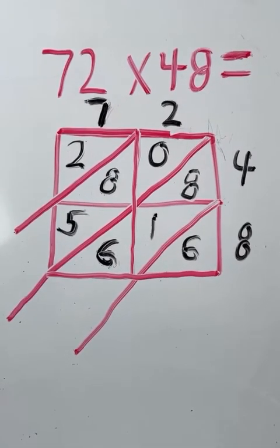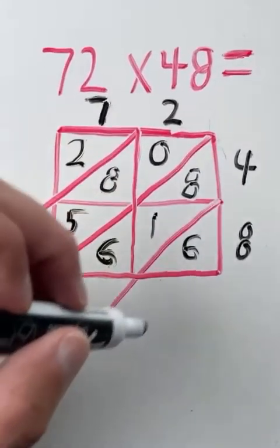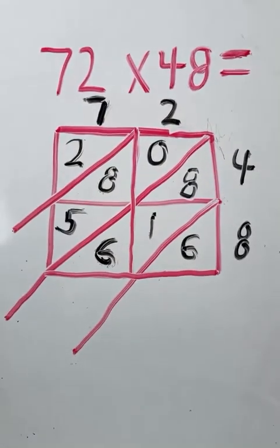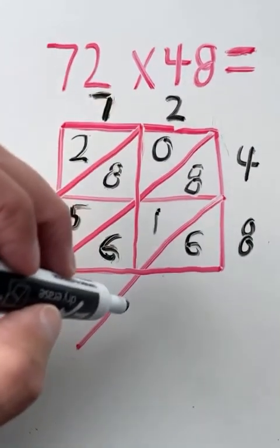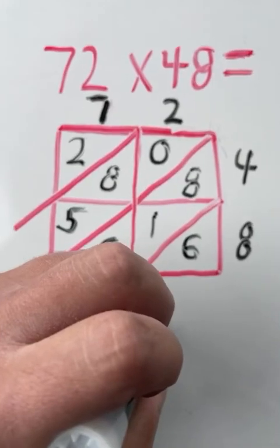Next, we are going to add the numbers going diagonally across. Looking at this diagonal line, we're adding all the numbers that are inside the square. Along this diagonal line, the only number we have is six. So we're going to have a six in the ones place.